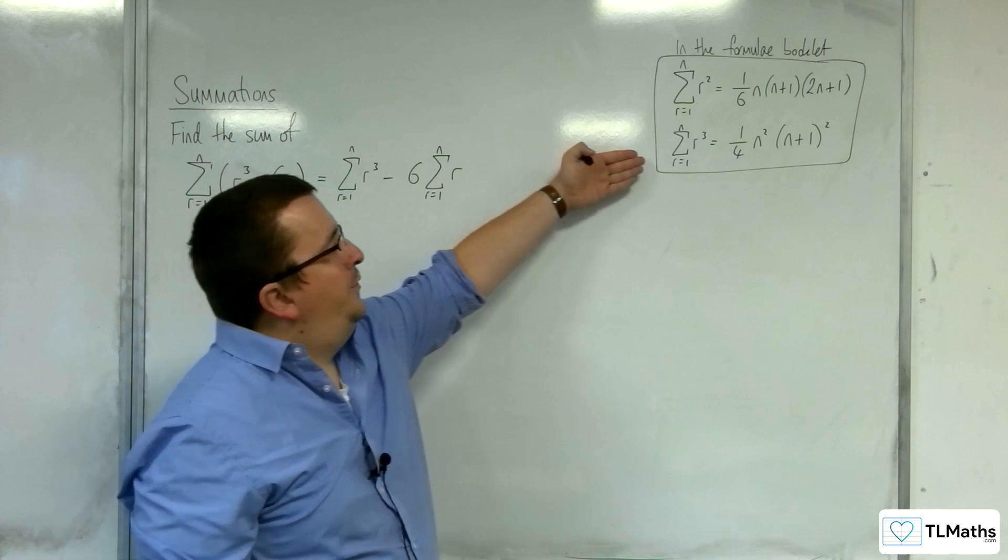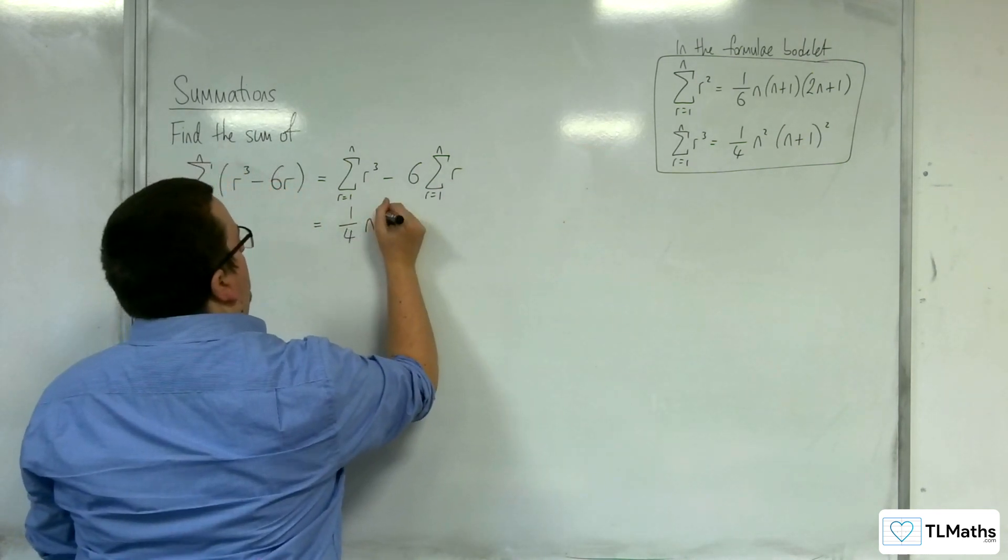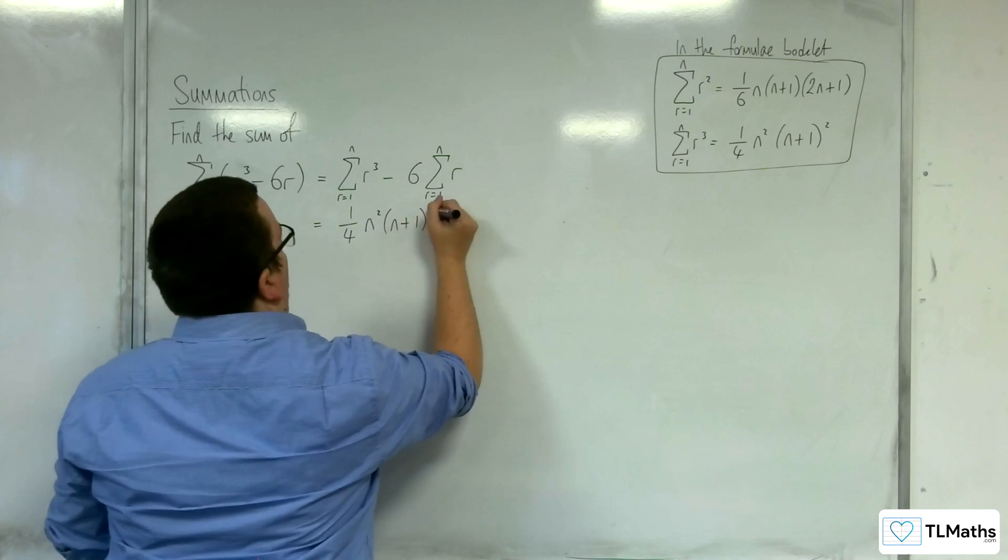So this one is of course given to us in the formula booklet, so we can write that straight down: 1 quarter n squared n plus 1 squared.